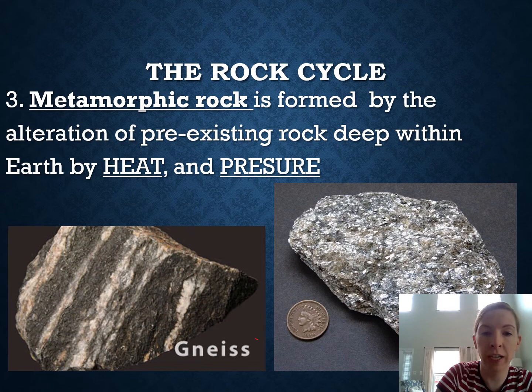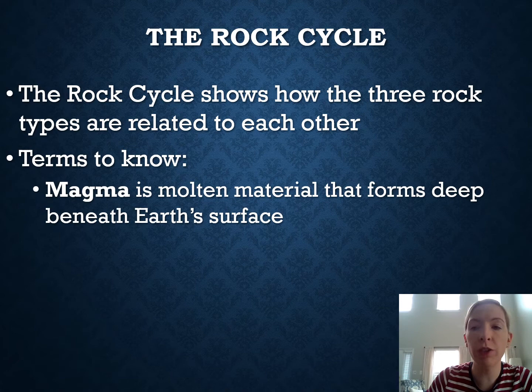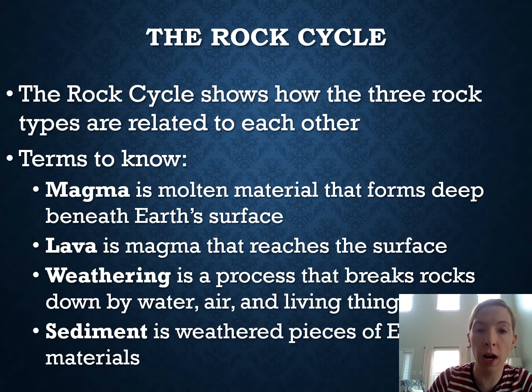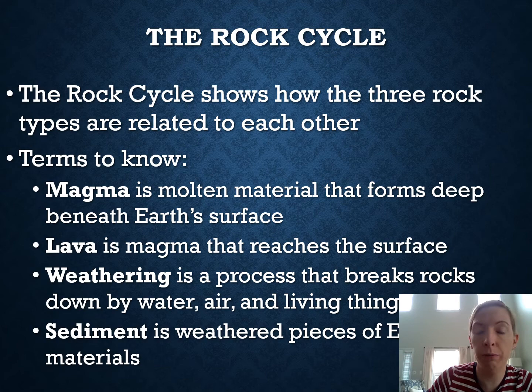Make sure you understand these vocabulary terms. Magma is melted rock below the surface. Lava is magma that has erupted onto the surface — we change the name when it reaches the surface. Weathering is the breakdown of rock into smaller pieces, and sediment refers to those smaller pieces.